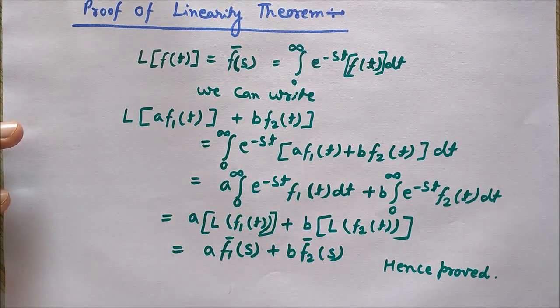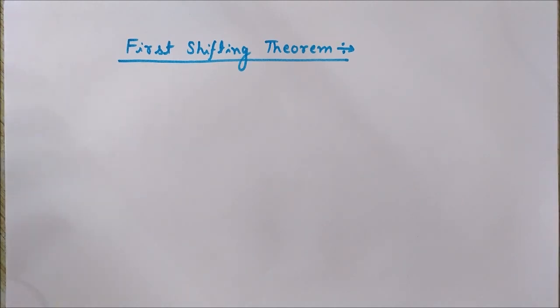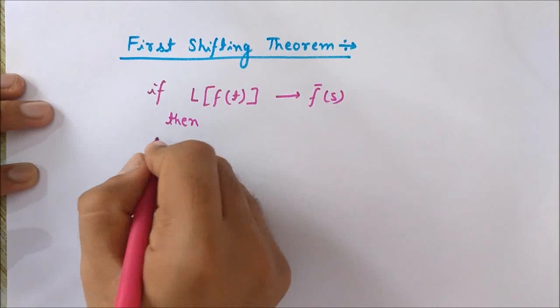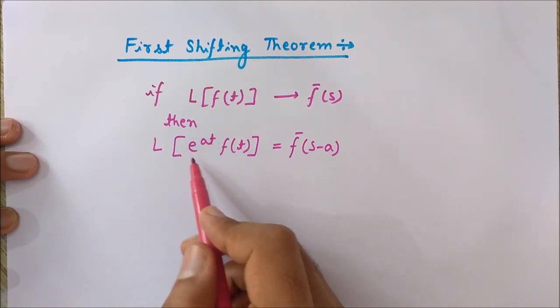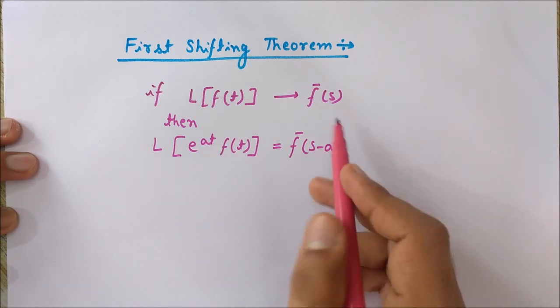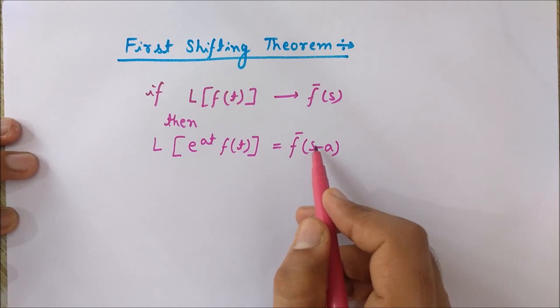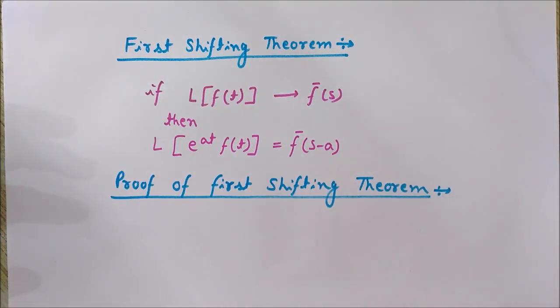So a·F1-bar(s) plus b·F2-bar(s) is the Laplace transform of a·f1(t) + b·f2(t) — hence it is proved. Now we will discuss the first shifting theorem for Laplace transform. This theorem is very important and is used frequently. The statement is: if we multiply f(t) by e raised to the power a·t, then s is replaced by s minus a. If it is minus a·t, then it becomes s plus a.